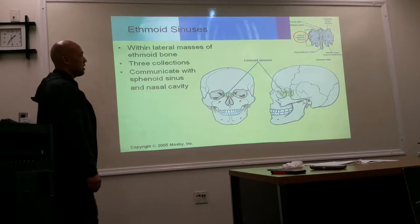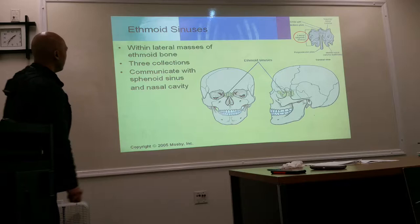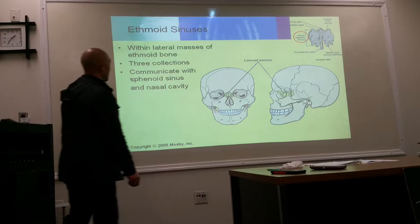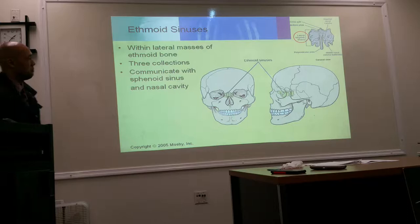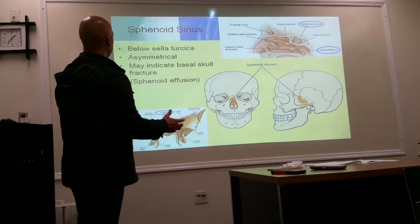The ethmoid bone has three collection systems: superior, posterior, and middle. They communicate with the sphenoid sinus in the nasal cavity, so there is communication between the ethmoid and the sphenoid sinuses.